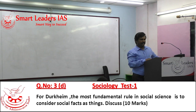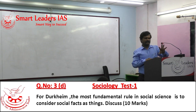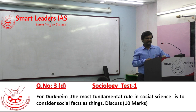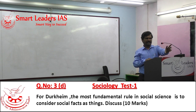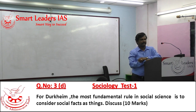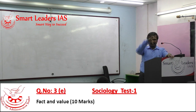Max Weber criticizes Emile Durkheim, saying that social reality should be studied using not observation but interpretation. He rejected sociology as a science. He wanted sociology to be called an interpretive science, not a natural science.